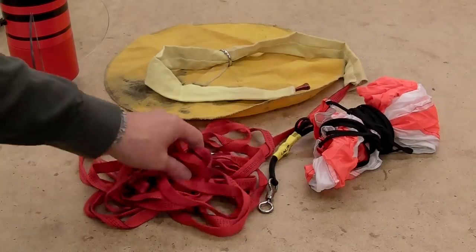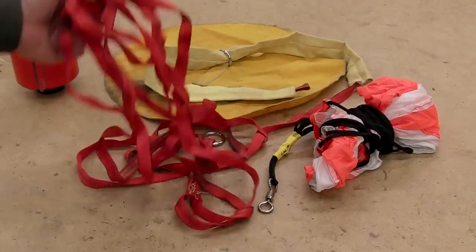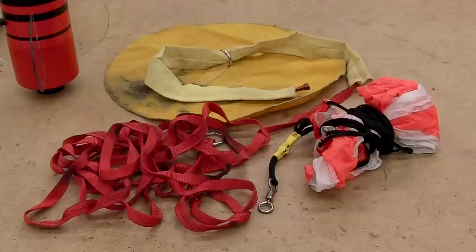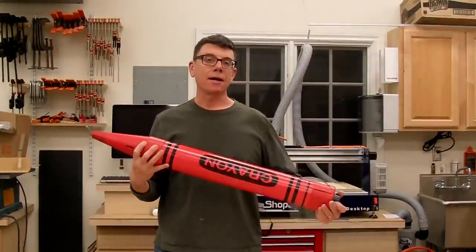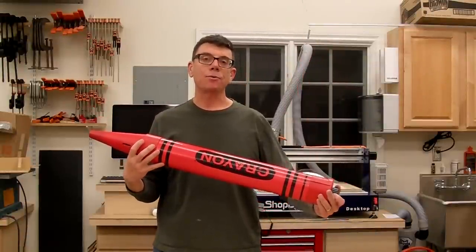Also since we have a very heavy nose cone make sure you use an extra-long bridle and a plenty large parachute. So I hope you enjoyed this video on how I made my crayon rocket and I hope even more that it inspires you to add one to your own fleet.